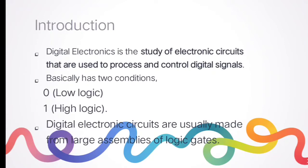Digital electronics has two conditions: 0 and 1. 0 represents low logic and 1 represents high logic. In terms of voltage, 0 equals 0 volts and 1 equals plus 5 volts.